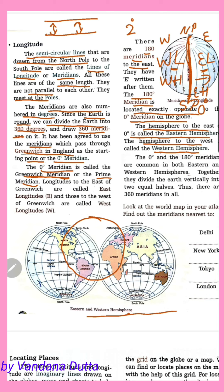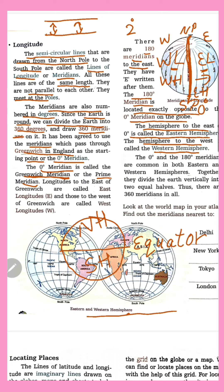The hemisphere to the west is called the Western Hemisphere. Just as the equator divides the earth into Northern and Southern Hemispheres, the Prime Meridian divides the earth into Eastern and Western Hemispheres. Hemisphere means half portion.